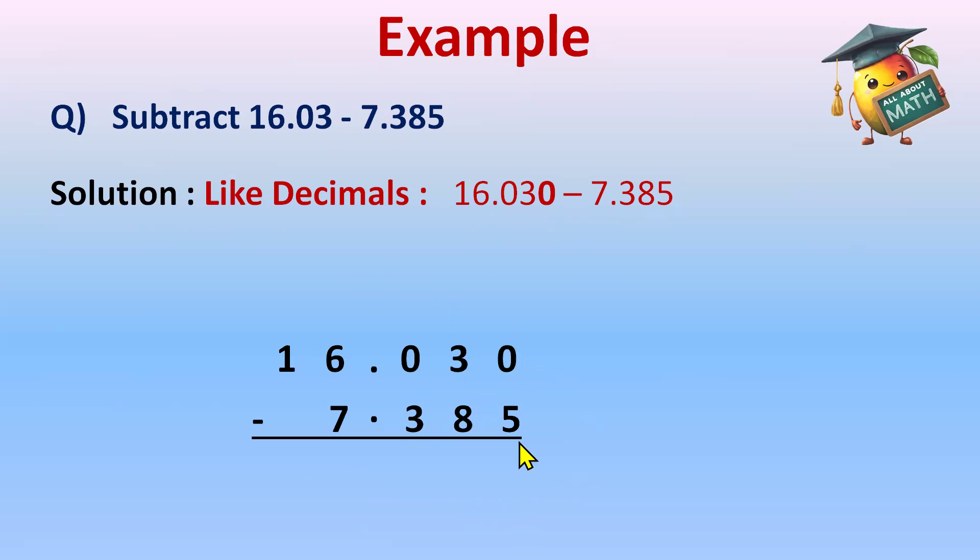Now we'll subtract. 0 minus 5 is not possible, so 0 will borrow 1 from 3. Before doing the subtraction, we'll write the decimal point just below the other decimals for the answer as well. Now we'll start with the decimal subtraction.